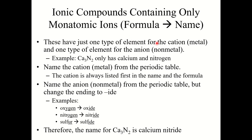Let's start with ionic compounds — specifically how we go from the formula to the name. This is a situation where you are given the chemical formula and asked to provide the name. Ionic compounds that contain only monatomic ions have just one type of element for the cation, which is typically a metal, and one type of element for the anion. For example, Ca3N2 contains only monatomic ions: one element for the cation and one for the anion.